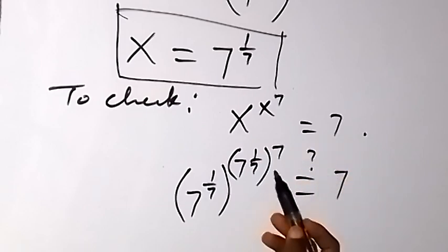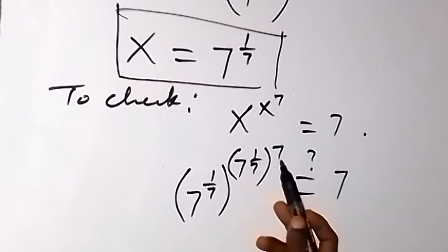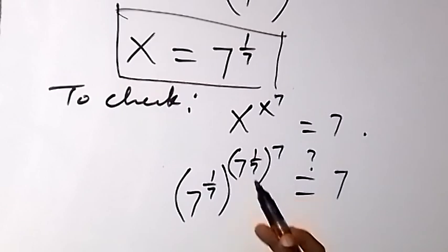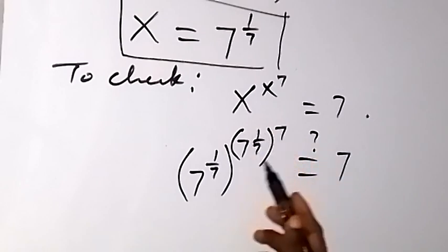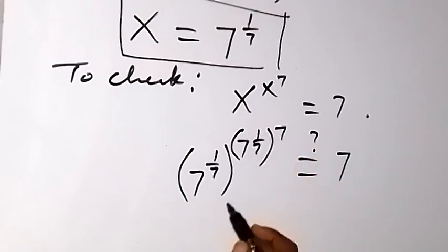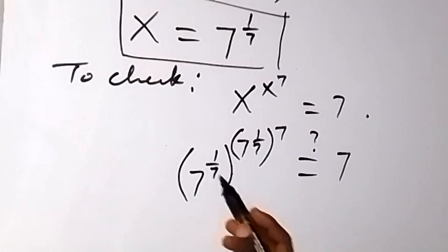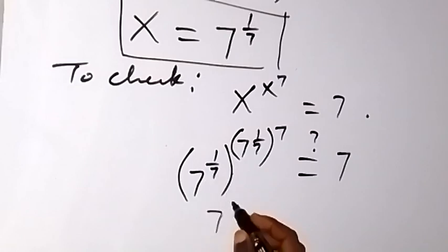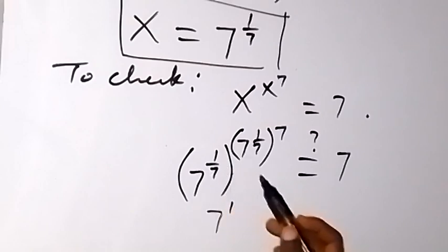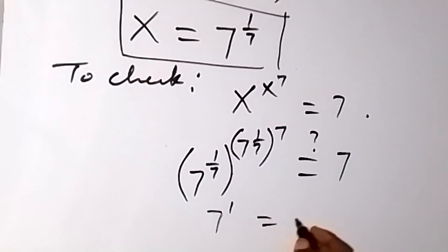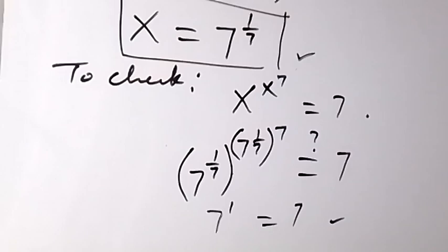Let's check now. This 7 will open the bracket, and we are going to have 7 over 7, which is 1, so that's 7 raised to power 1. So instead of writing raised to power 1 over 7 raised to power 7, we can simply write it as 7 raised to power 1. And when this 7 multiplies as well, we discover we get 7 raised to power 1, because 7 times 1 over 7 gives 7 over 7 which is 1. So that's 7 raised to power 1, which equals 7. So 7 equals 7, and therefore x equals 7 raised to power 1 over 7 is correct.